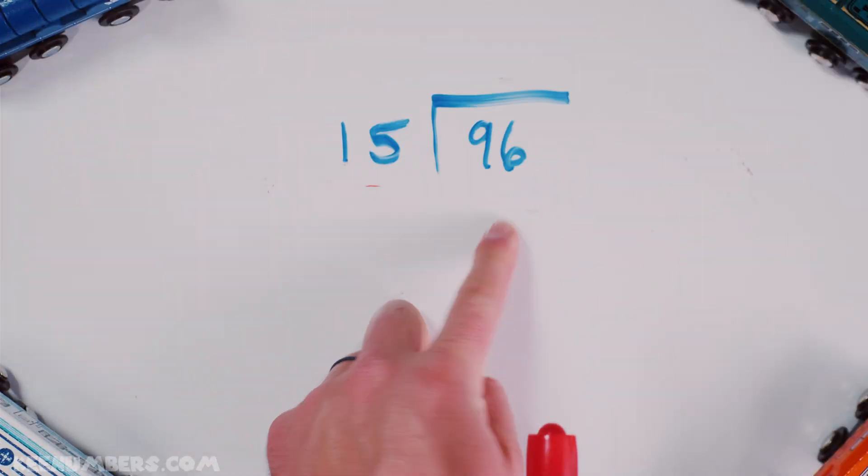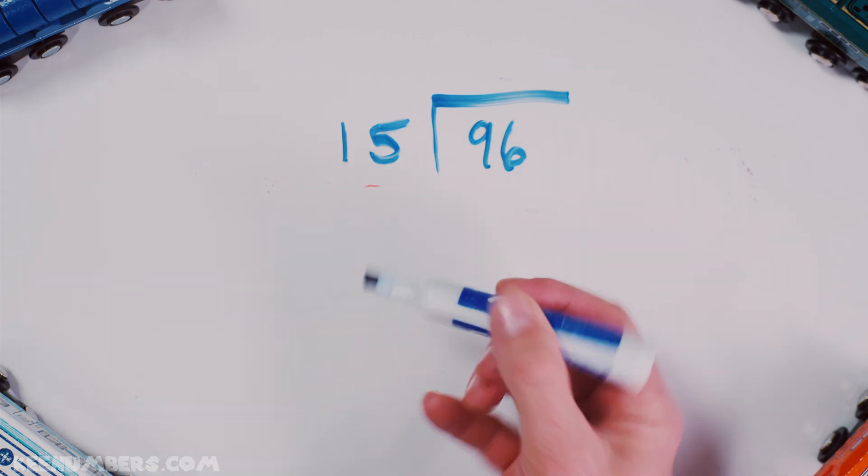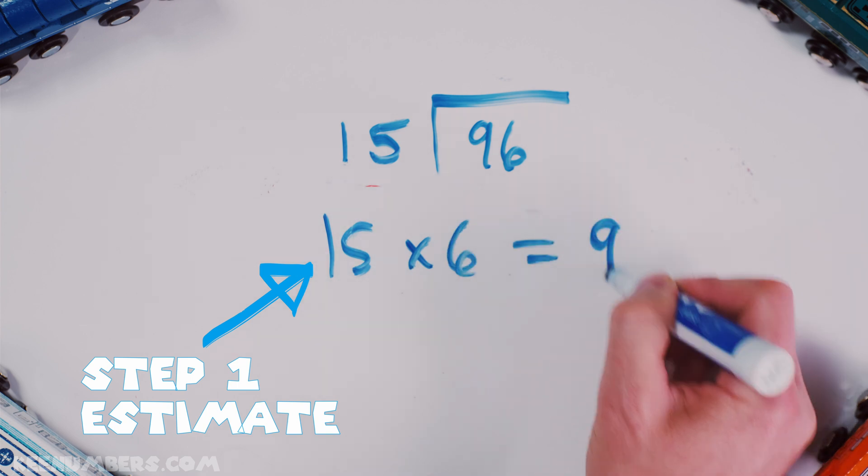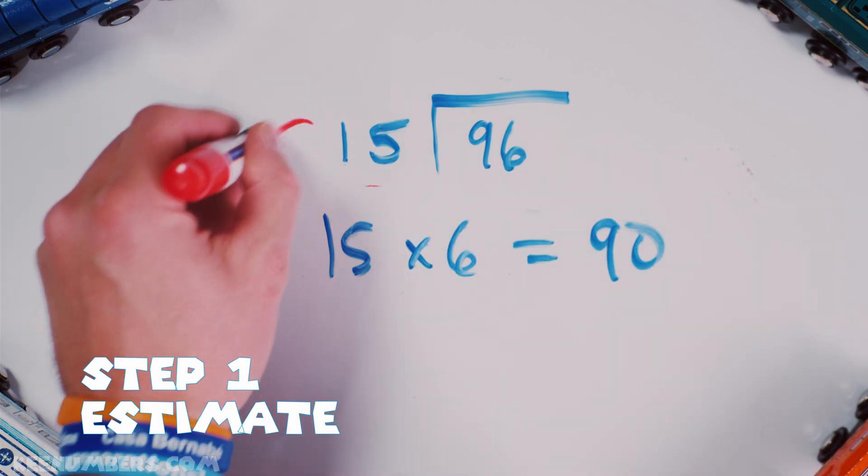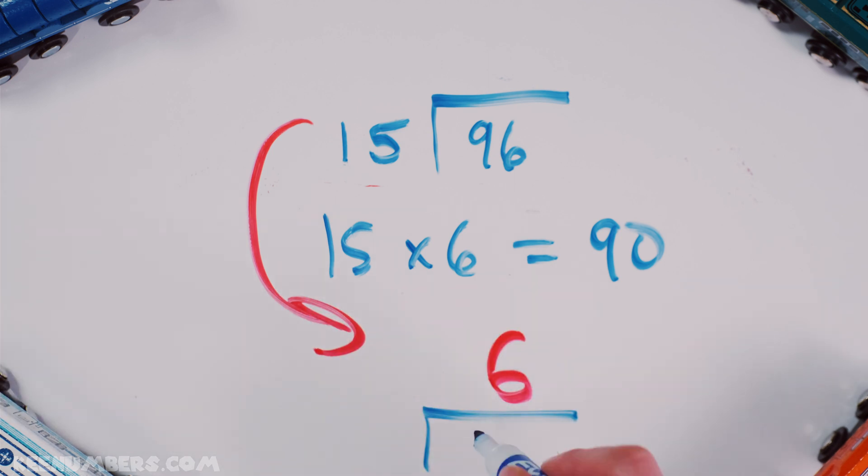How many times is 15 going to 96? It's a two-digit divisor. And we're gonna go off of this information that 15 times 6 is 90. So you're gonna have 6 up here on top of the house,